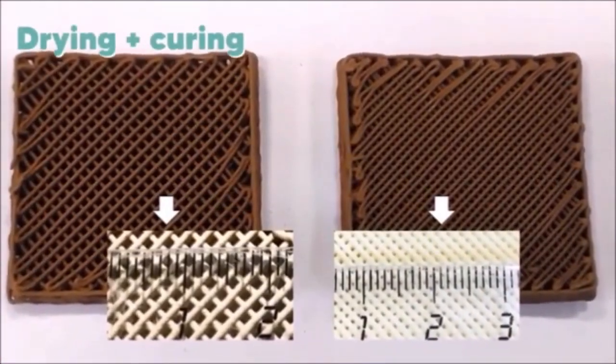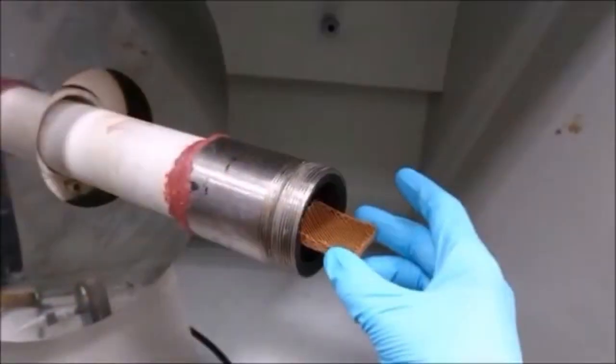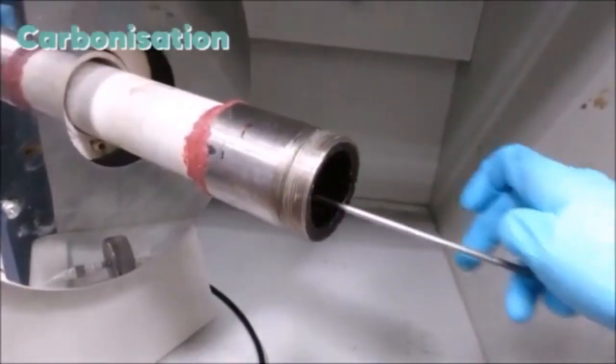This process results in three-dimensional lattices of carbon filaments with an approximate diameter of 500 microns and a mesh size of around 425 microns.